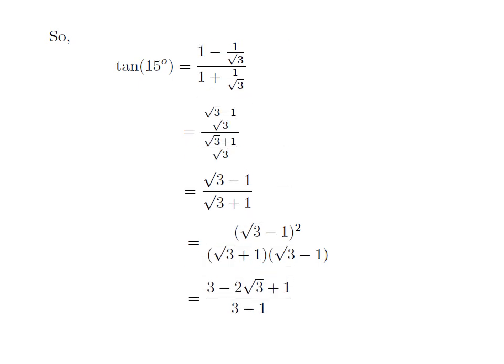Expanding the square of square root of 3 minus 1 gives: square of square root of 3, which is 3, minus 2 times square root of 3, plus square of 1, which is 1. The denominator is in the form of a plus b into a minus b, which equals a squared minus b squared.